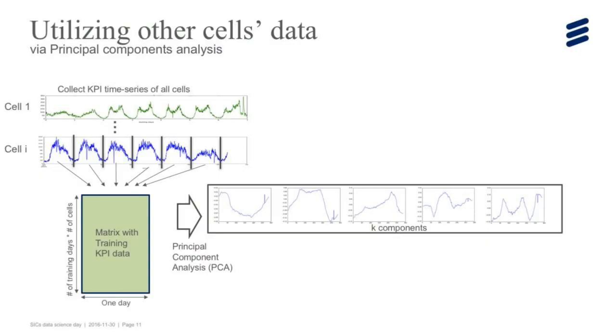The answer is that we utilize other cells' data using the collaborative filtering approach. For training the pattern for individual cells, we collect the observed time series training data from every cell in the network, and split them by days. So we build this training matrix. Each row of the training matrix is one day time series training data. So each row corresponds to one day, one cell. The number of rows in this matrix is number of training days times number of cells.